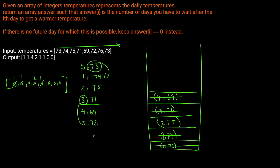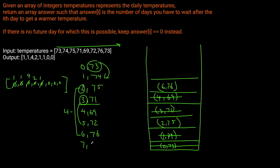Now we're at day six with value 76. Since 76 is greater than 75, we take the difference between day six and day two, which is four. So for index two, it would take four days to find a better temperature. We calculate that and then add (6, 76) to our stack in hopes of finding a better temperature. Now we get to the seventh index with value 73. Since 73 is not greater than 76, we have to just add it to the stack. And now we've gone through the entirety of the array.